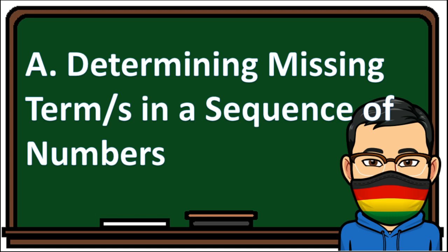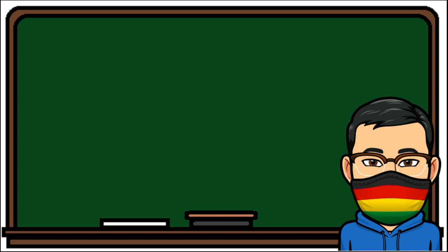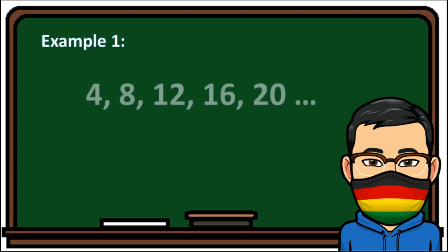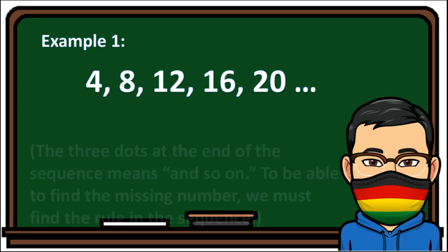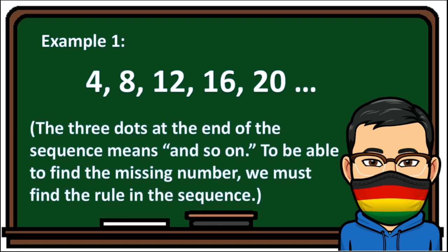Determining missing term or terms in a sequence of numbers. Example 1: 4, 8, 12, 16, 20. The three dots at the end of the sequence means 'and so on.' To be able to find the missing number, we must find the rule in the sequence.